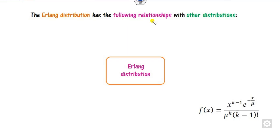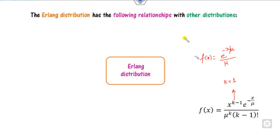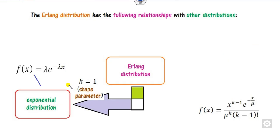The Erlang distribution has special relationships with other distributions. If you set K=1 in the PDF, the X raised to power 0 becomes 1 and 0 factorial is 1, so the PDF reduces to E raised to the power minus X/Mu — which is nothing but the exponential distribution. So whenever the shape parameter K is 1, the Erlang distribution becomes the exponential distribution, where Lambda = 1/Mu.